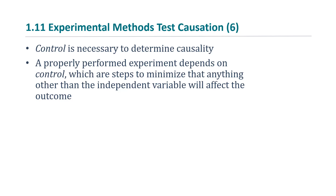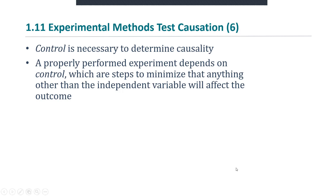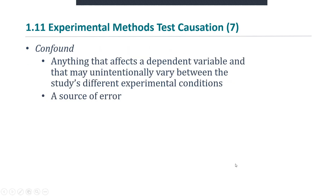It can be just small mistakes that cause another difference to appear between groups. This is why control is so important — you want everything to be equal except that one thing, the independent variable. When something else isn't equal, we call it a confound. It's anything that could affect the dependent variable and that may unintentionally vary between the different experimental conditions, such as signing one group up in the morning versus the other group at night.